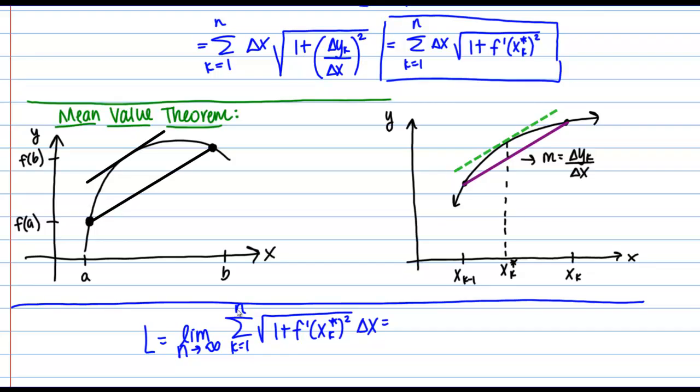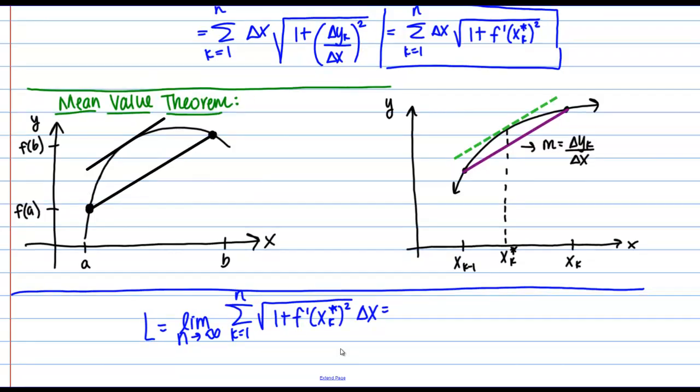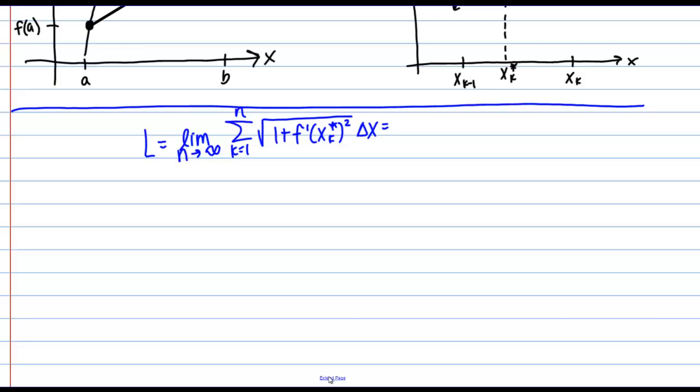And just like we did in Riemann sums, we can express this summation as a definite integral. If we do that, it's the definite integral from a to b of the square root of 1 plus f prime of x squared dx. This here is what we'll use to compute arc length.